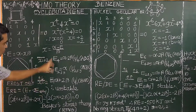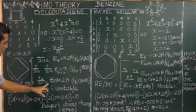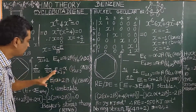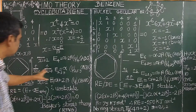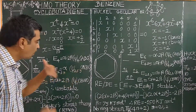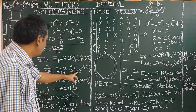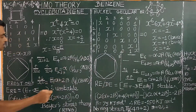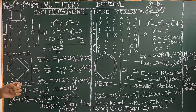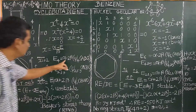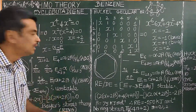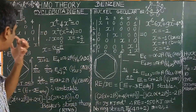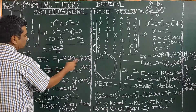Substituting x = −2, we get E1 = α + 2β, which is the bonding molecular orbital. When x = 0, levels 2 and 3 are degenerate — they have the same energy and are non-bonding orbitals, because only the Coulomb integral α is present with no exchange integral β. Therefore E2 and E3 are considered non-bonding orbitals. And E4 = α − 2β, the antibonding orbital.